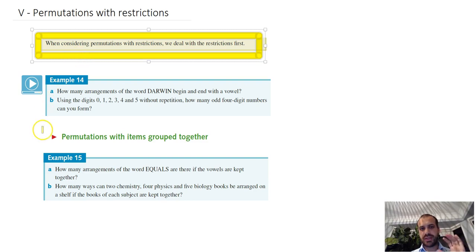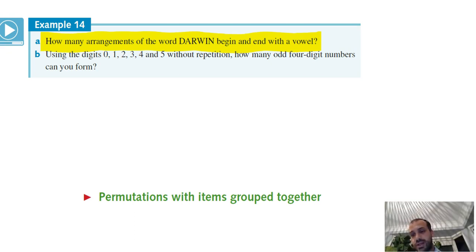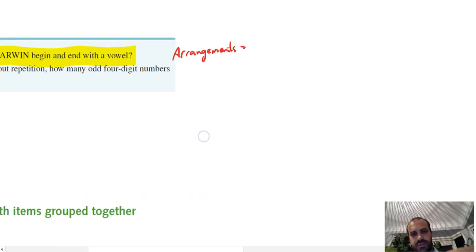So we're going to run through four examples here, and each time we're going to remember to consider the permutations restrictions and deal with the restrictions first. Number one: how many arrangements of the word DARWIN begin and end with a vowel? Alright, so this is one of those cases where drawing a little box method is going to help you out, but it's not the end of the game.